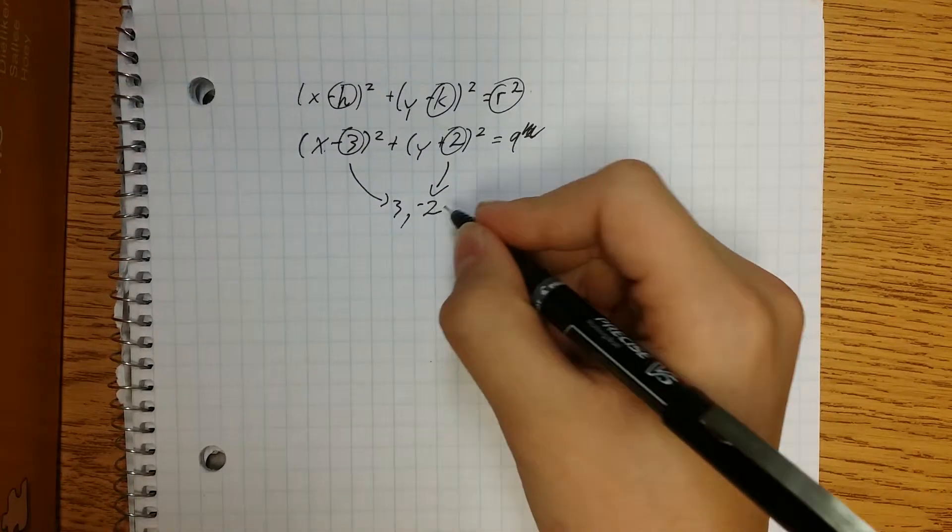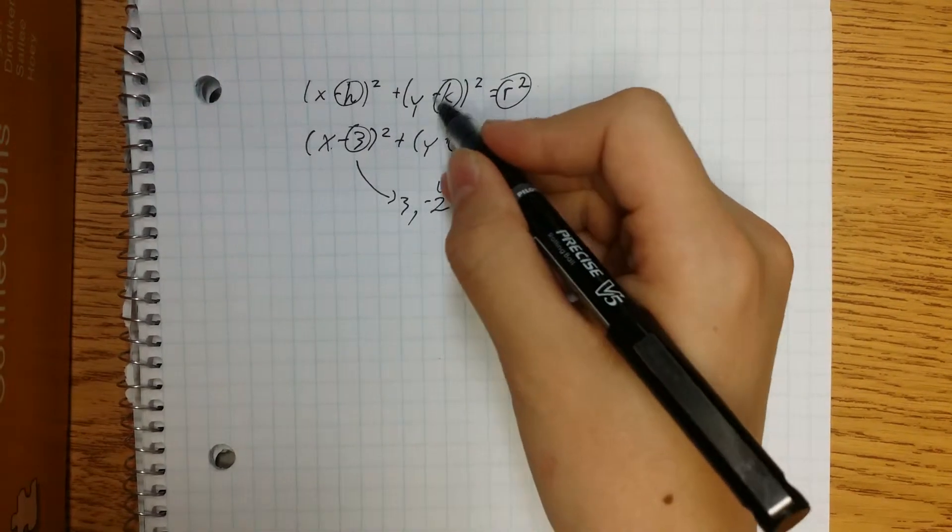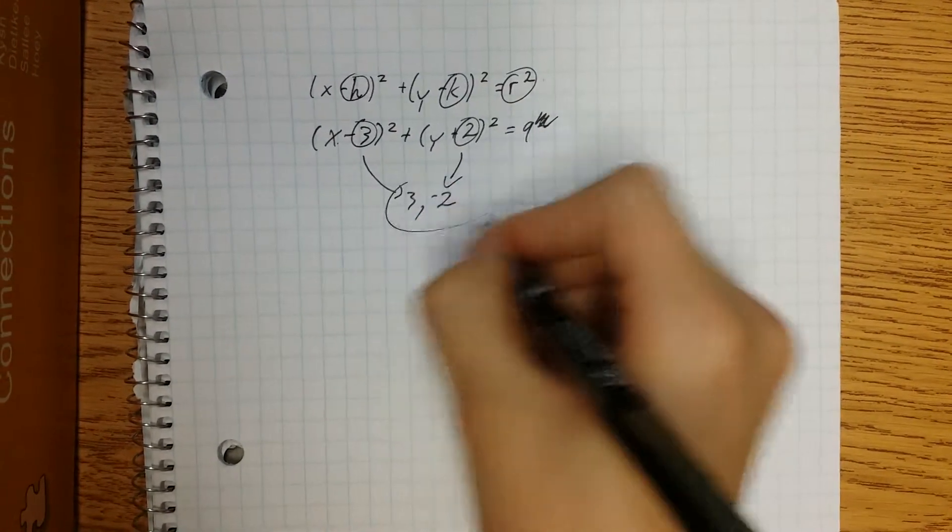If you're wondering why this is negative, it's because this is positive in this equation but negative in the base problem. So this is the center of our circle.